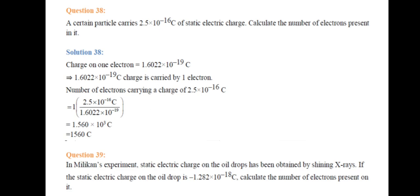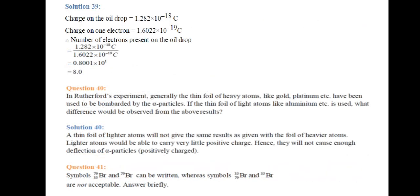Next: In the Millikan experiment, static electric charge on oil drops has been obtained by shining X-rays. If the static electric charge on the oil drop is −1.282 × 10⁻¹⁸ coulombs, calculate the number of electrons present on it. Charge given = 1.282 × 10⁻¹⁸ C; charge on one electron = 1.6022 × 10⁻¹⁹ C. Dividing: 0.8001 × 10⁻¹ ... giving 8 electrons total.